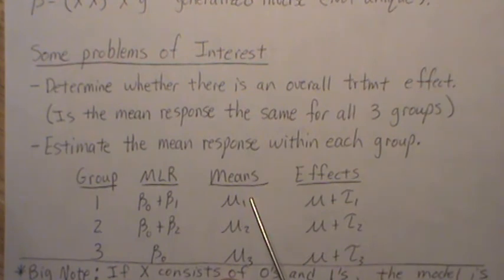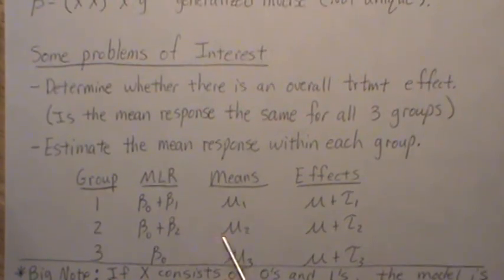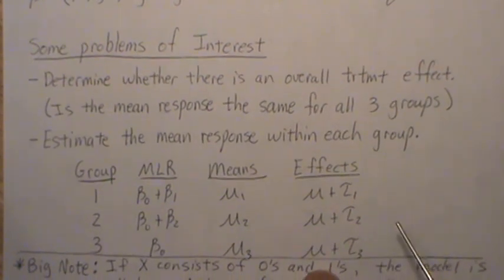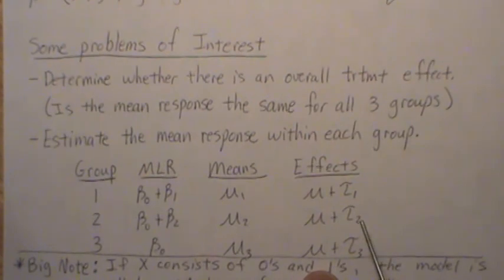Now, if we're in the means model, the overall group one effect is mu one, and mu two is for group two, and mu three. In the effects model, the mean effect is mu plus tau 1, mu plus tau 2, mu plus tau 3.